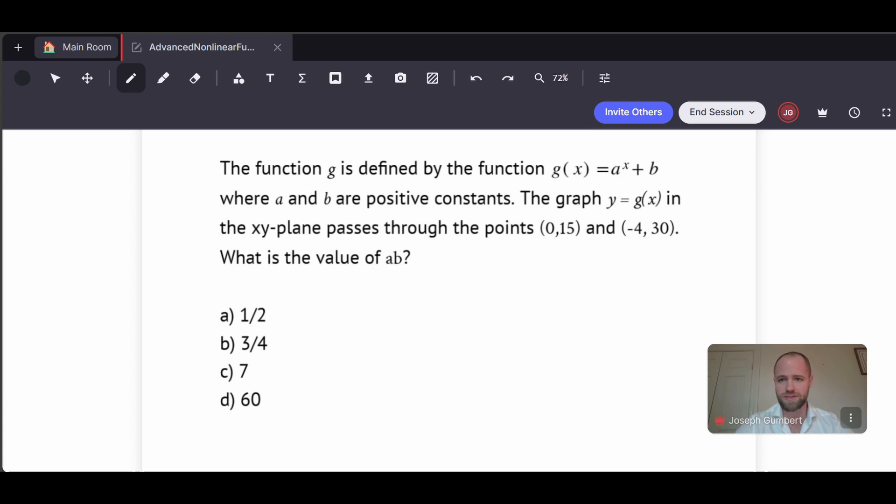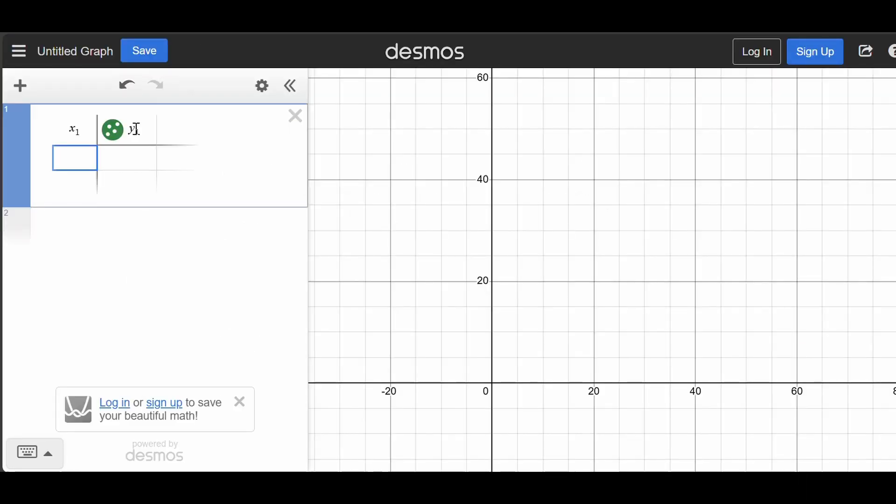So I'm just going to go straight to Desmos, and I'm going to input a table with these two points that they gave me, which are (0,15) and (-4,30).